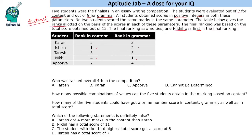Since Ishika has first rank and Nikhil has fourth rank in content, she must have at least three marks more, because all students got distinct marks. For example, if the maximum is 7, she could have 7, the next person 6, then 5, then 4 — so there is a minimum three-mark gap. If Nikhil has X marks in content, Ishika must have at least X plus 3. It could be more, since the numbers don't have to be consecutive.